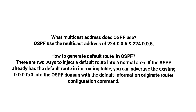To generate a default route in OSPF, there are two ways to inject a default route into a normal area. If the ASBR already has the default route in its routing table, you can advertise the existing 0.0.0.0/0 into the OSPF domain with the 'default-information originate' router configuration command.